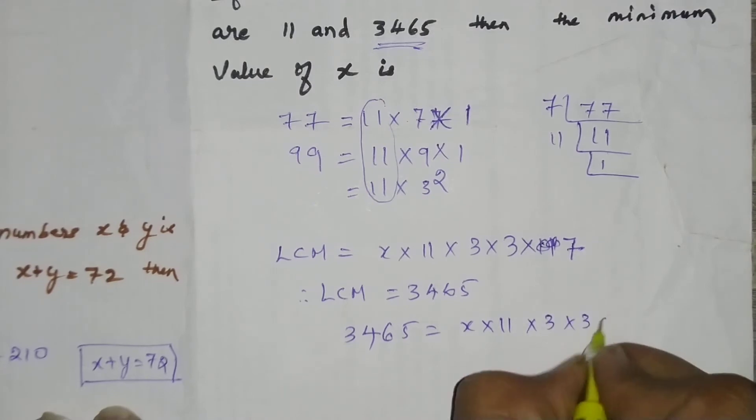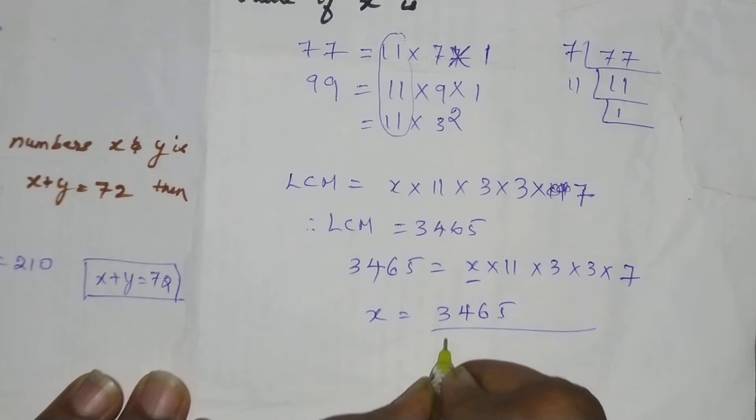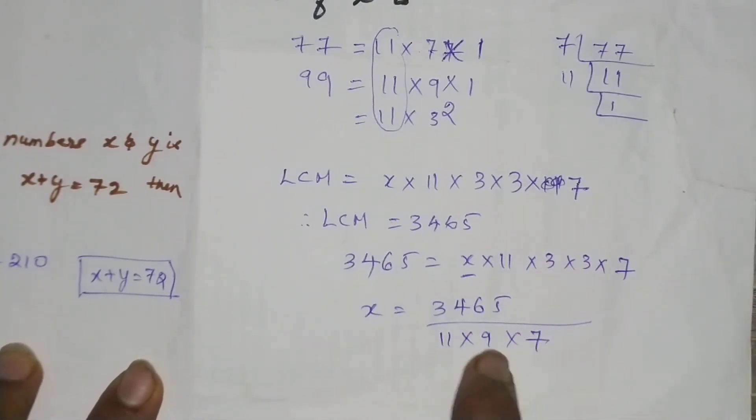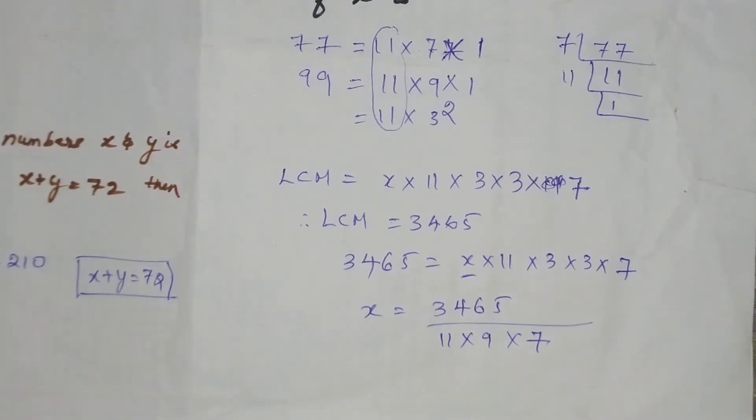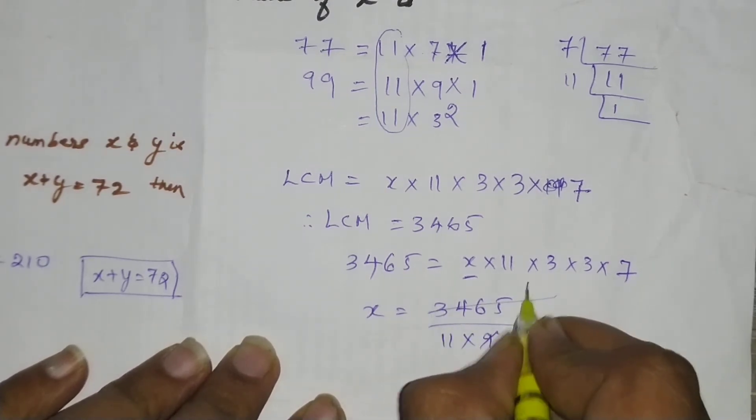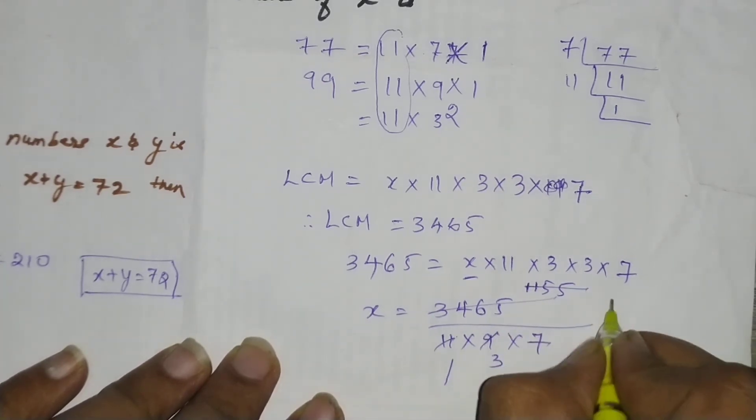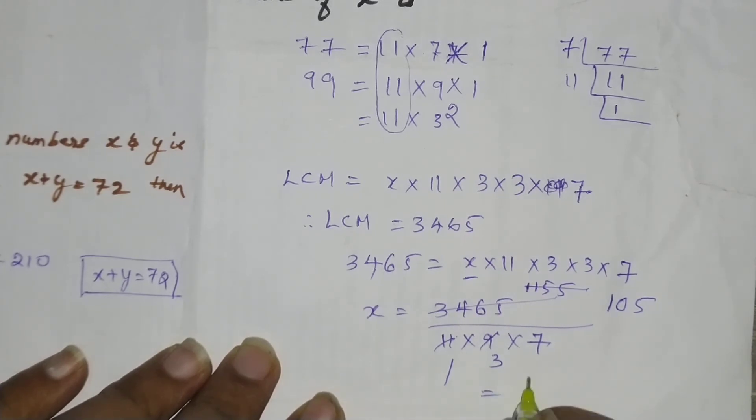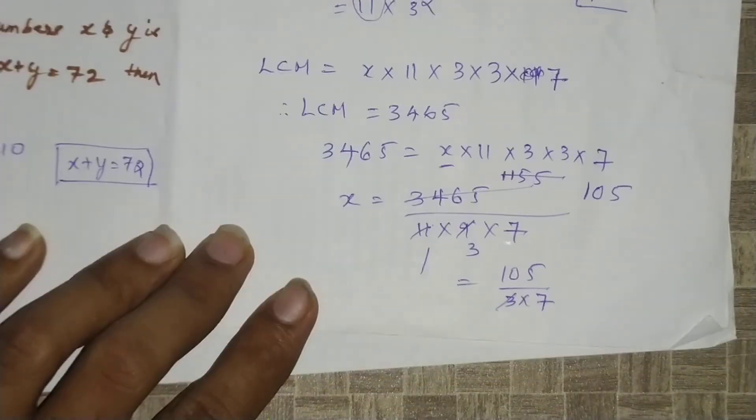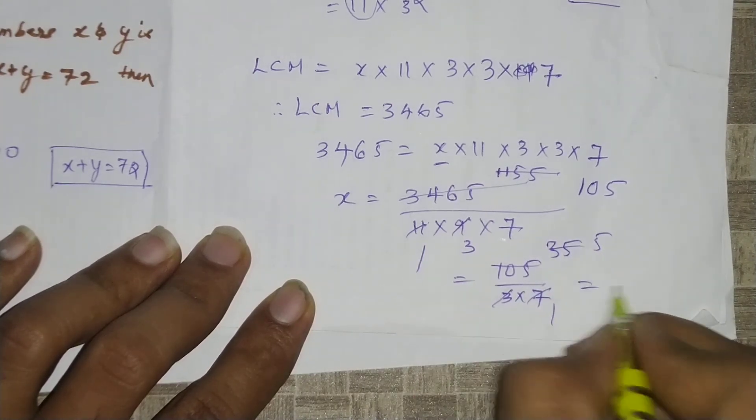Next, 3465 equals x times 11 times 3 times 3 times 7. We have to find the value of x. x equals 3465 divided by (11 times 9 times 7). In 3 tables, 3 threes are 9. 3 ones are 3. Then in 11 tables, 11 ones are 11. 11 fives are 55, giving us 105 divided by 3 times 7. Solving this, we get the value.